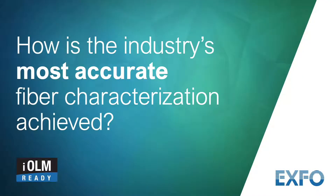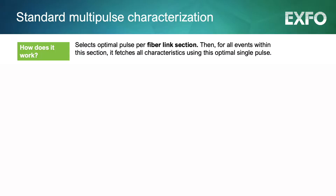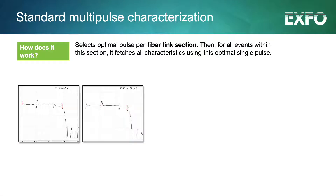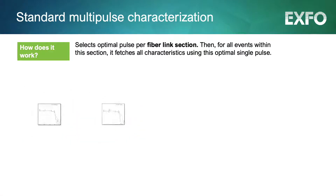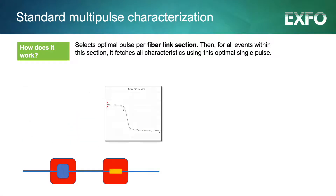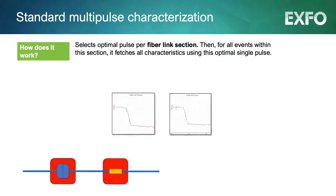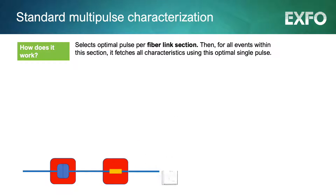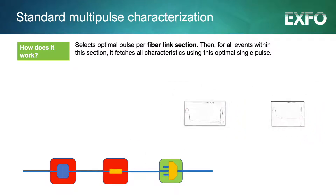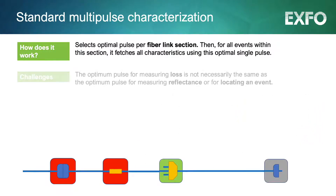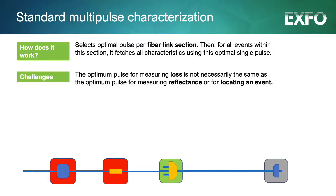How can you achieve the highest accuracy and reliability when characterizing fiber optic links? Standard multi-pulse width characterization selects optimal pulse widths per fiber link section. Then for all events within this section, it captures all characteristics using this optimal single pulse width.